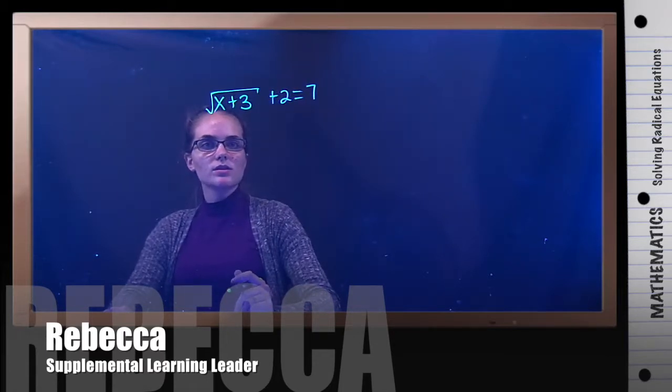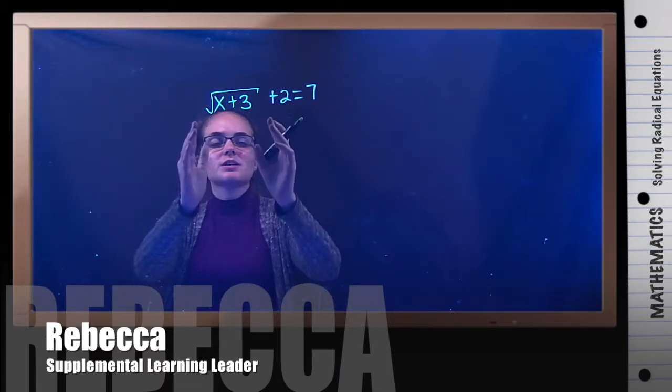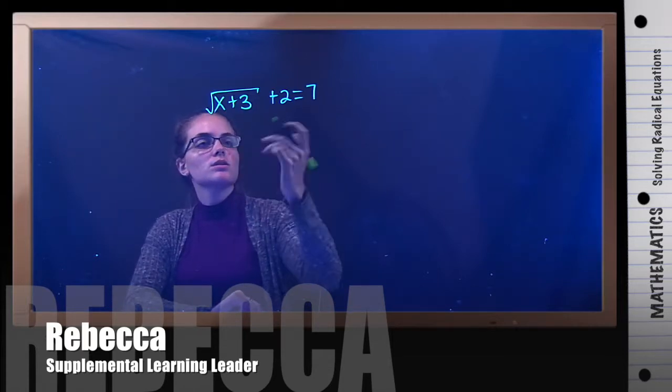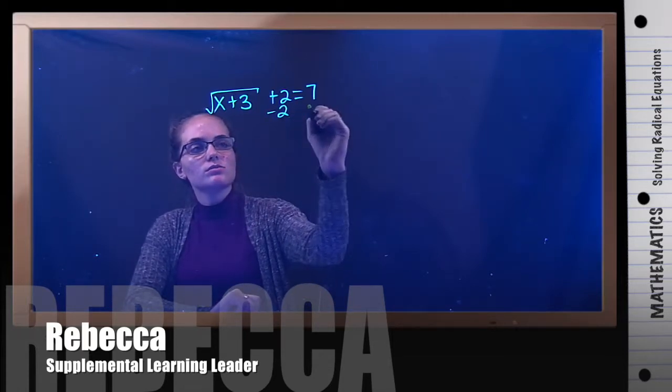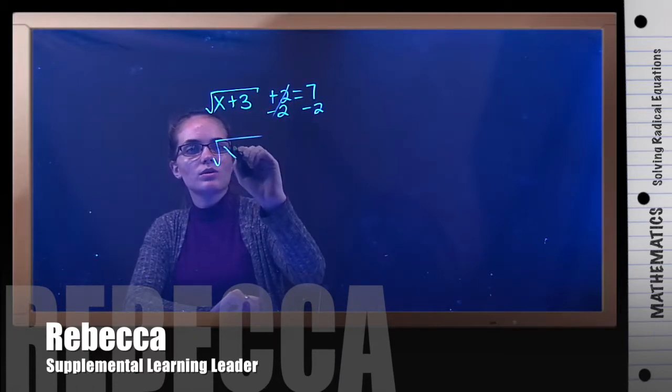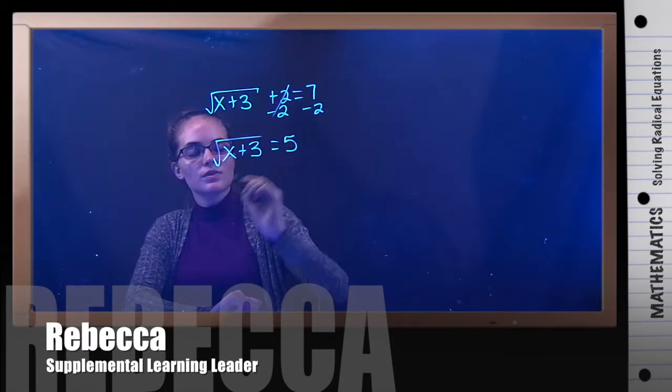So in order to solve for x, first we're trying to get x alone. And to do that, the first thing I'm going to do is get this radical alone on this side. So I'm going to subtract the 2 from both sides so that all we have on this side is square root of x plus 3 equals 7 minus 2 is 5.